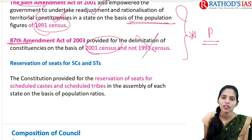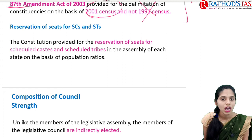Regarding reservation of seats for SCs and STs: our Constitution mainly provides for reservation of seats for Scheduled Castes and Scheduled Tribes, mainly based on their population in a given area.